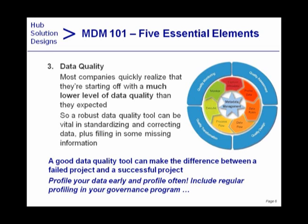Profile your data early and often — like the saying about voting in Chicago: vote early and vote often. Include regular repeating of profiling in your data governance program to monitor data quality levels over time, particularly if you do a lot of acquisitions. The worst thing you can do is accept data from a newly acquired company and dump it into your production systems without assessing what that would do to your data quality levels ahead of time.